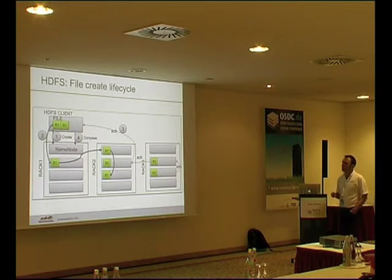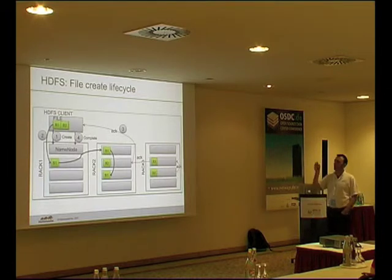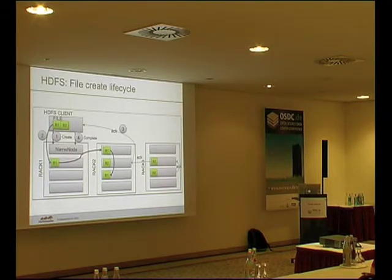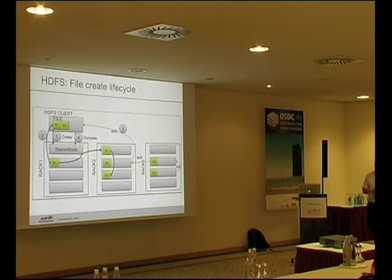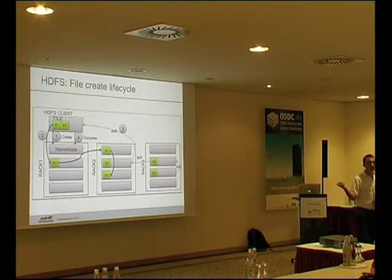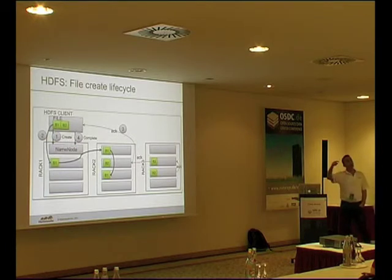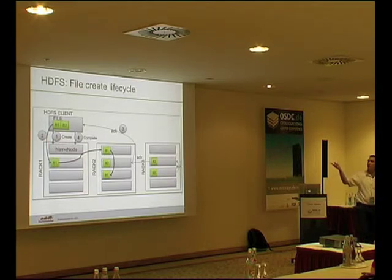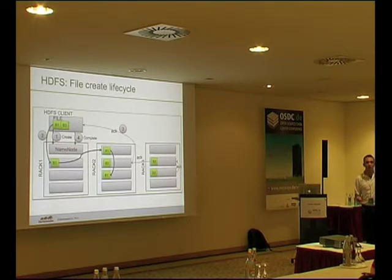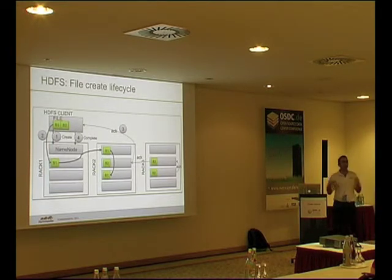When you copy a file, the client goes to the namenode and says it wants to copy a file to HDFS. The namenode replies with a server to use. The client sends the data to that server, which then replicates the block — typically a replication factor of three, though you can change this. If you lose one or even two servers, the namenode detects the under-replicated block and copies it to extra servers. If a node simply reboots, the existing copies remain intact.